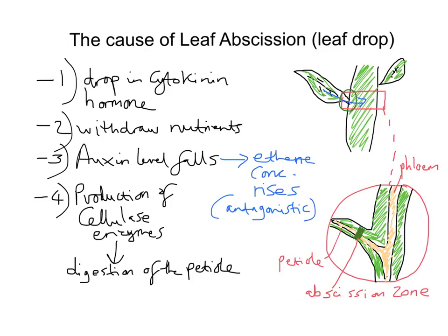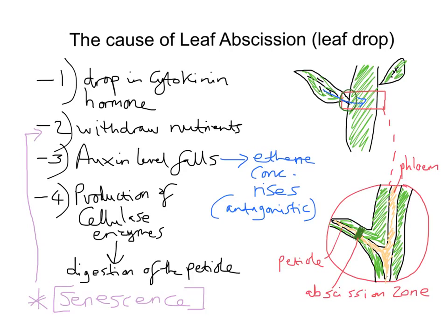To summarise: cytokinin prevents plant senescence — the removal of nutrients from the leaf. When cytokinin levels are high, we don't get senescence. But when cytokinin levels fall, we start to get withdrawal of nutrients. Auxin levels also fall, and as we've seen, auxins inhibit the production of ethene. So when auxin levels fall, ethene levels rise, and then we get the whole process leading to the digestion of the petiole. That's the cause of leaf abscission.